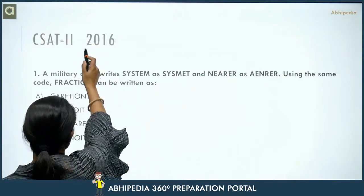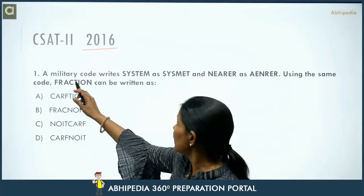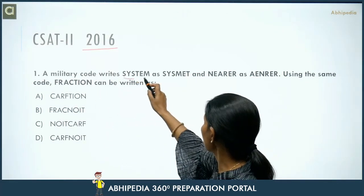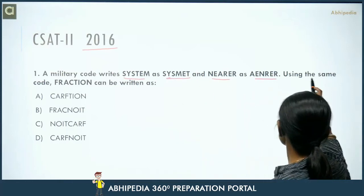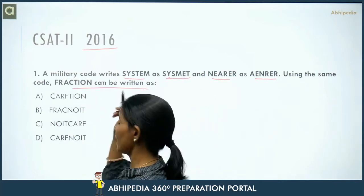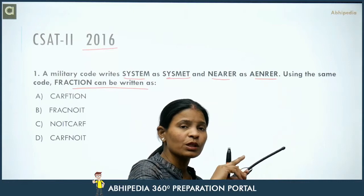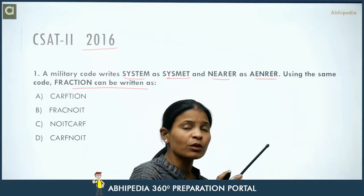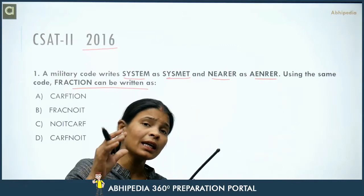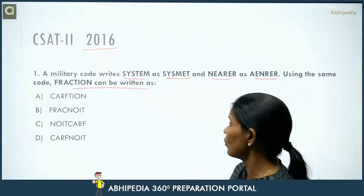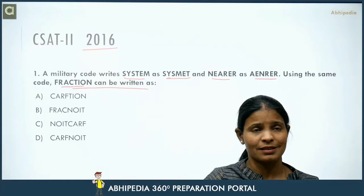This question was asked in 2016. The question states: in a military code, 'system' is written as one code and 'nearer' as another. Using the same code, how can 'fraction' be written? In coding and decoding, some words with their codes are given, we find the logic applied, and then apply the same logic to the question word.